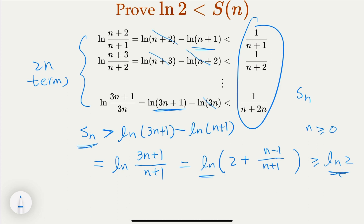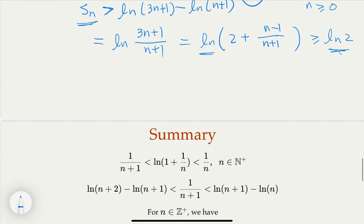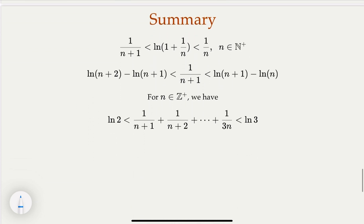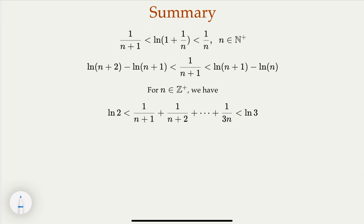And earlier, we proved it's smaller than log 3. So in summary, what we did is we based on this basic inequality for the logarithm, and we rewrite it so that 1 over n plus 1 is in between these two. And then you apply 2n terms here, and eventually you have the proof.